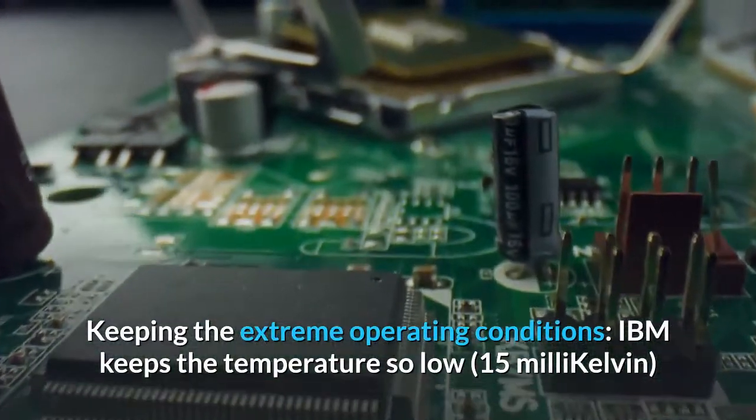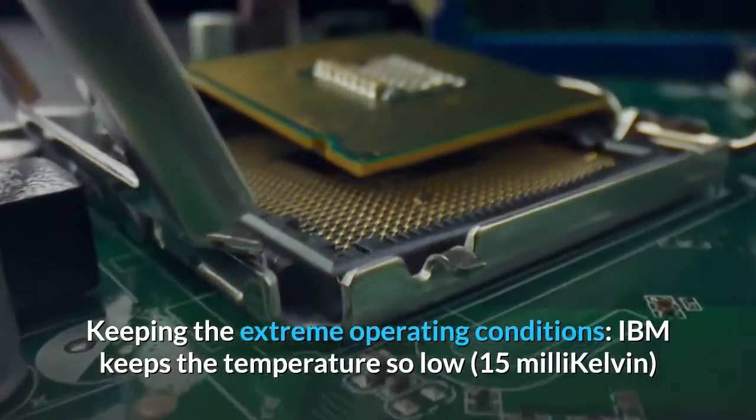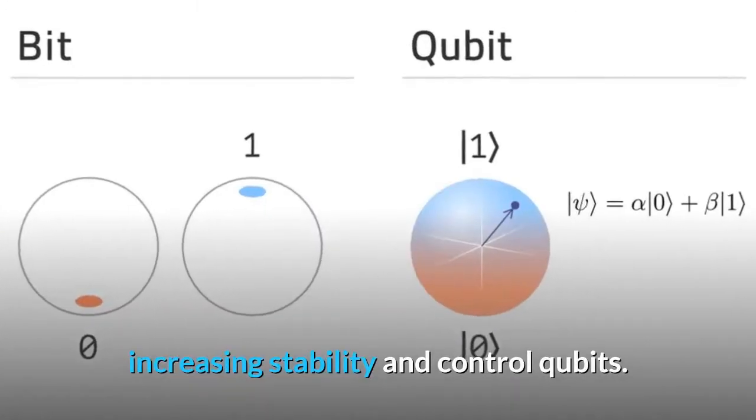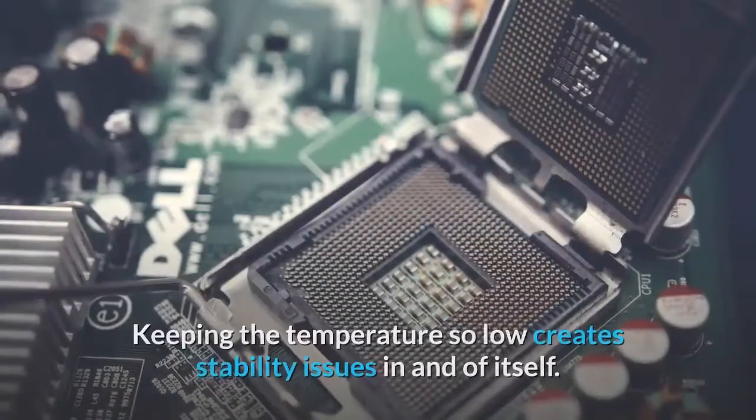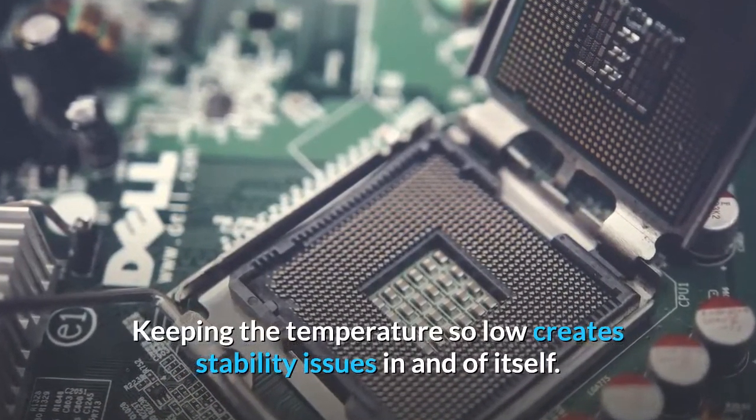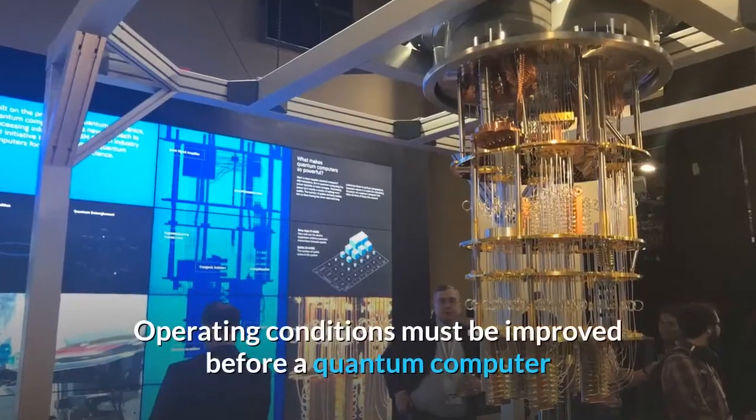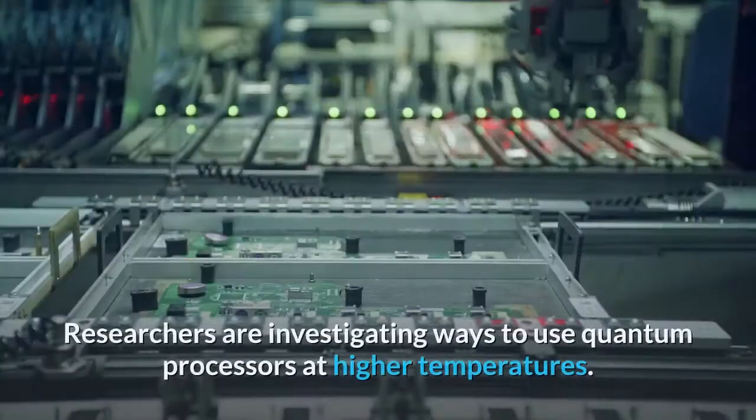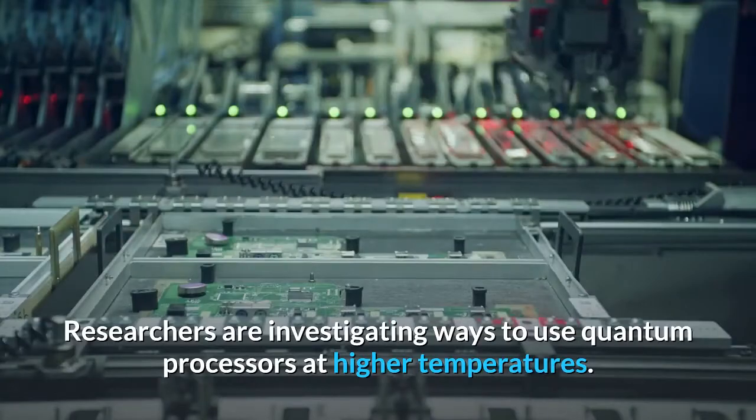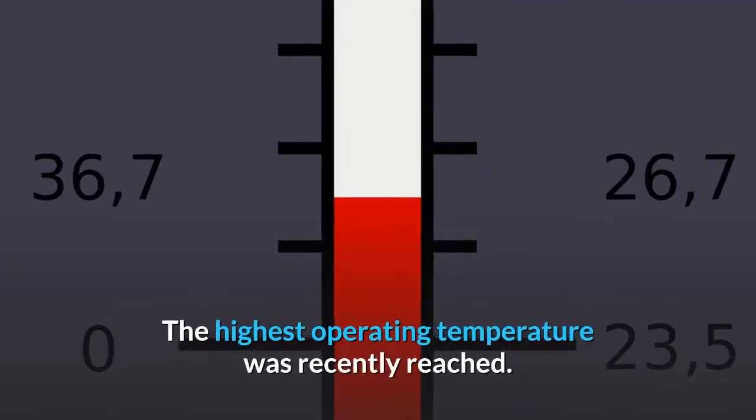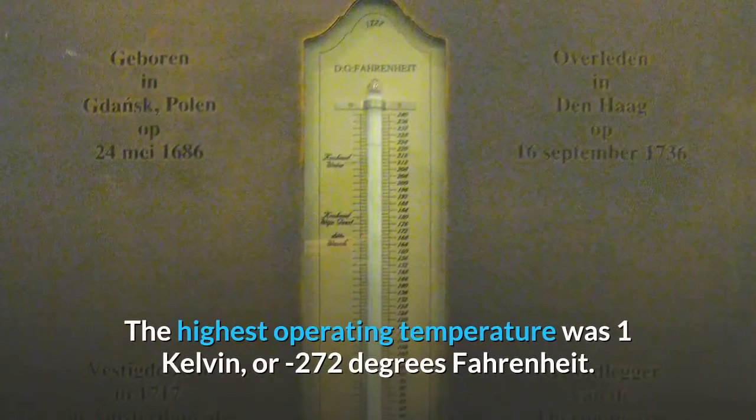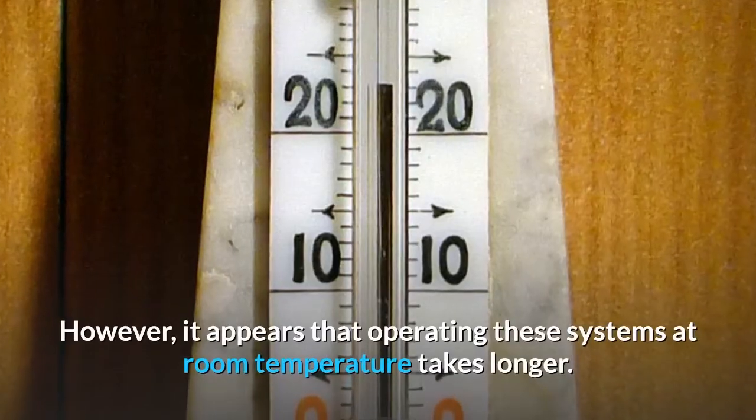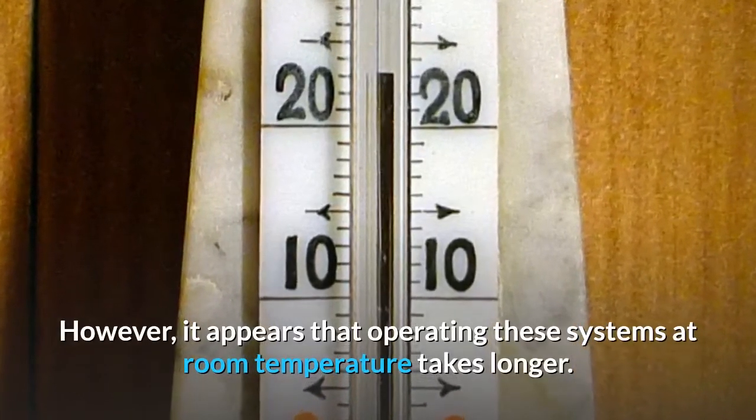Keeping the extreme operating conditions. IBM keeps the temperature so low that there is no ambient noise or heat to excite the superconducting qubit, increasing stability and control qubits. Keeping the temperature so low creates stability issues in and of itself. Operating conditions must be improved before a quantum computer or processor can be widely commercialized. Researchers are investigating ways to use quantum processors at higher temperatures. The highest operating temperature was recently reached. The highest operating temperature was 1 Kelvin, or minus 272 degrees Fahrenheit. However, it appears that operating these systems at room temperature takes longer.